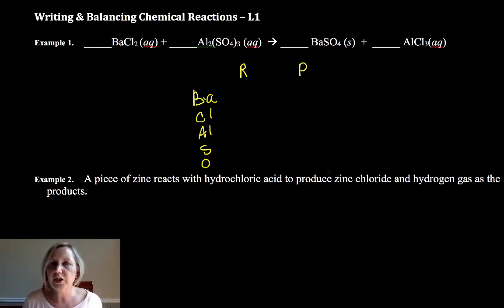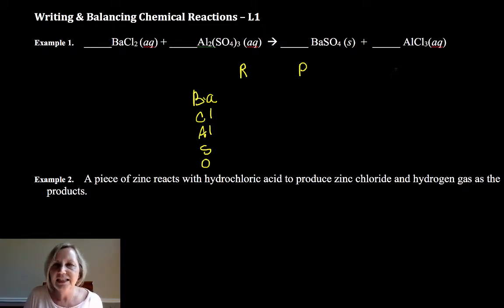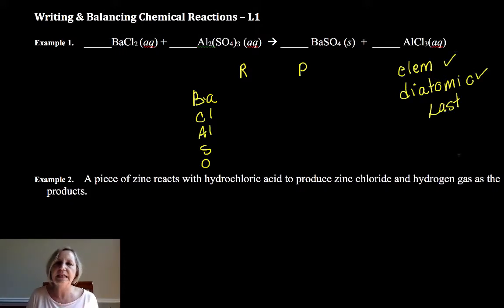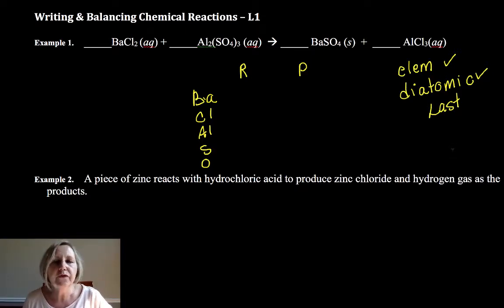There's a variety of ways you can do this — it's trial and error. One guideline is that if you have an element all by itself or a diatomic, you want to save those for last. Do elements last, then diatomics second to last if you have both, because putting a number in front of those won't change your count.